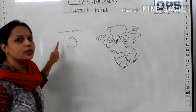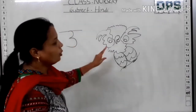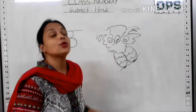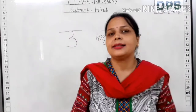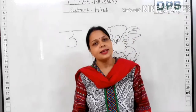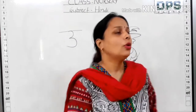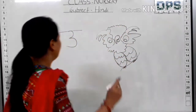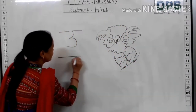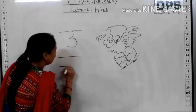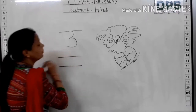Look here. This is an Ullu. Now how do we write Ullu? Look here. First I draw here a small sleeping line.